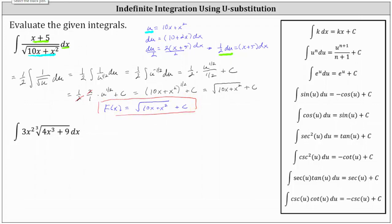Looking at the next example and analyzing the integrand function, we have a degree two monomial outside the cube root and a degree three polynomial under the cube root. Since the derivative of a degree three polynomial is degree two, we will let u equal the radicand of 4x cubed plus 9, which means this is the cube root of u, equivalent to u to the power of one third. We determine du, which equals the derivative of 4x cubed plus 9 with respect to x times dx, giving us 12x squared times dx.